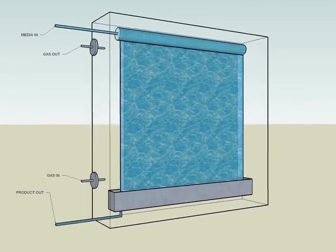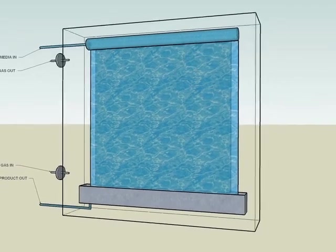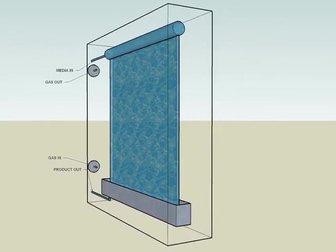Ports positioned at the top and the bottom of the reactor ensure even flow and distribution of gases into the system.